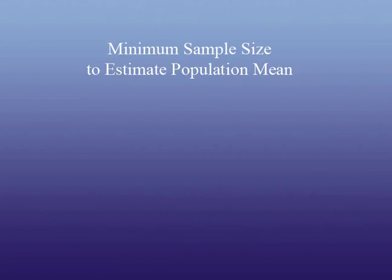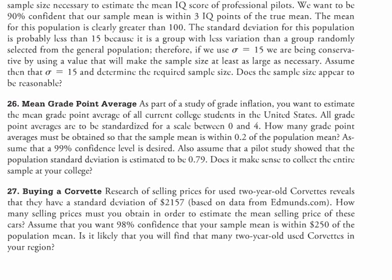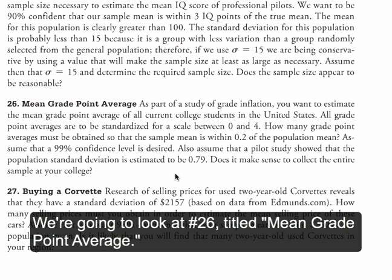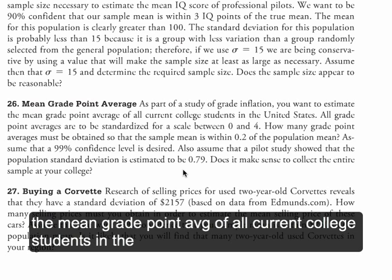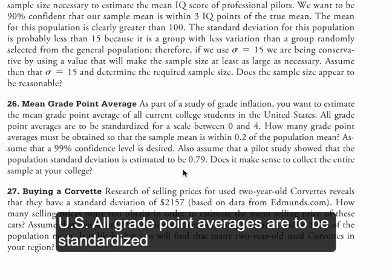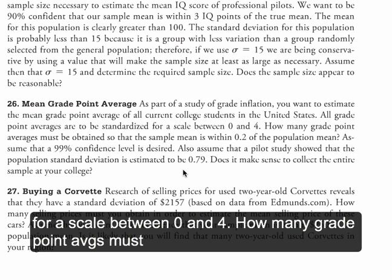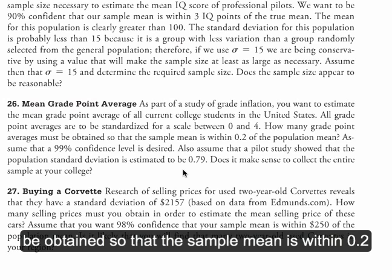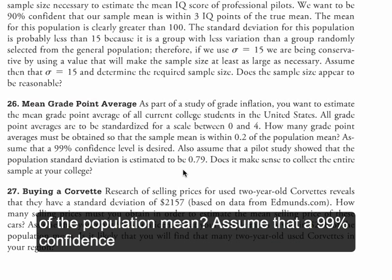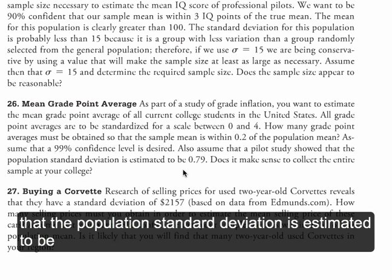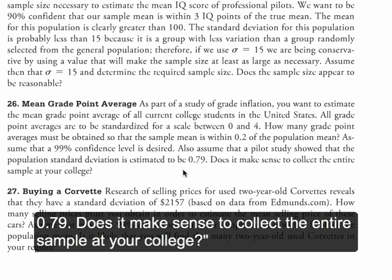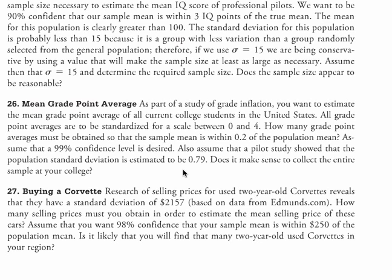Let's take a look at the problem — number 26, titled Mean Grade Point Average. As part of a study of grade inflation, you want to estimate the mean grade point average of all current college students in the United States. All GPAs are standardized on a scale between 0 and 4. How many GPAs must be obtained so that the sample mean is within 0.2 of the population mean? Assume a 99% confidence level, and that a pilot study showed the population standard deviation is estimated to be 0.79. Does it make sense to collect the entire sample at your college?